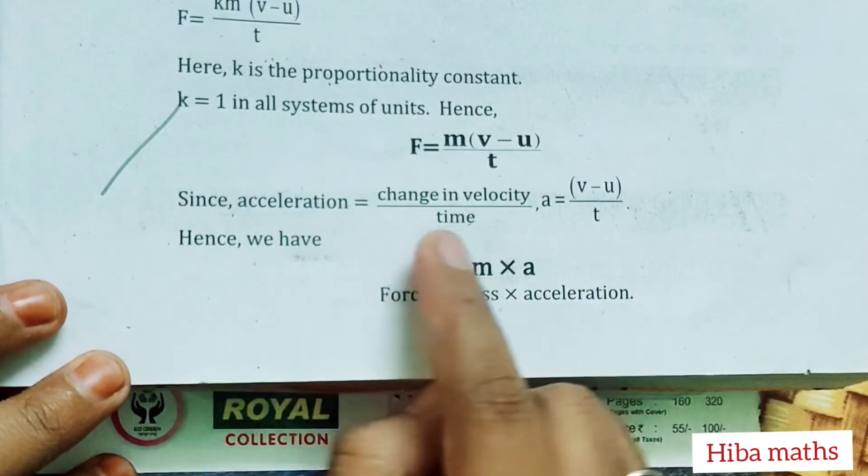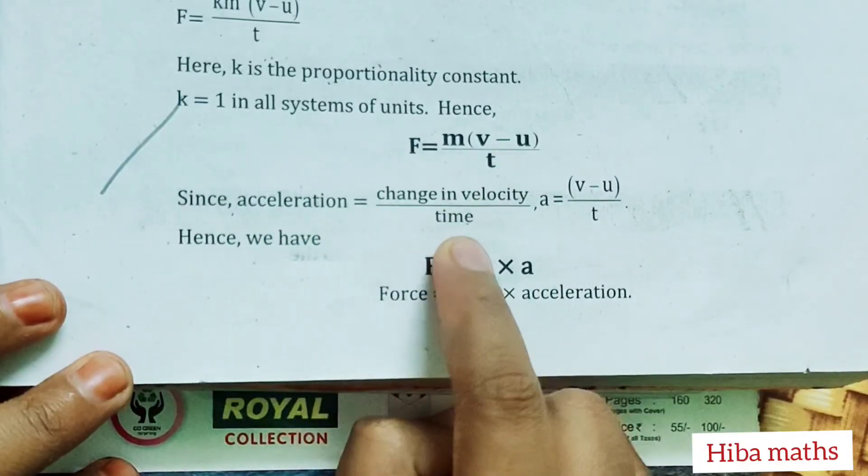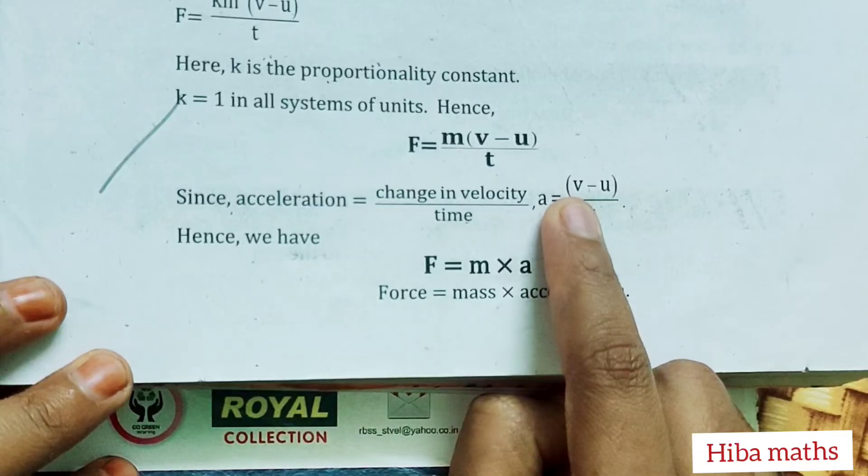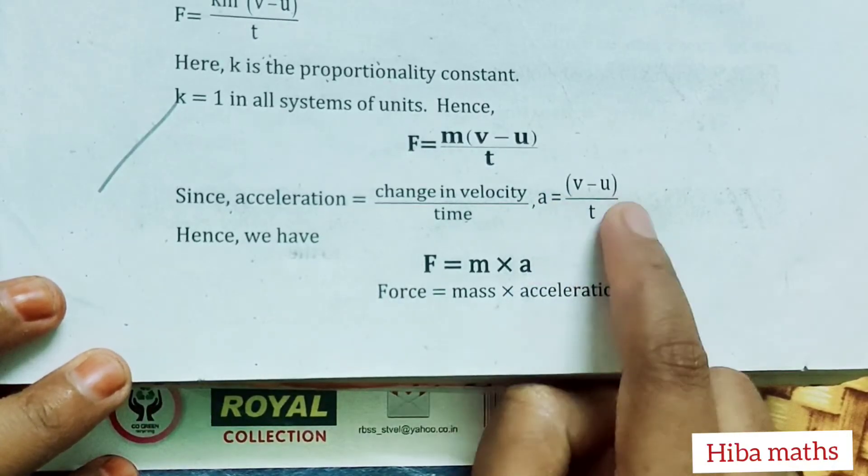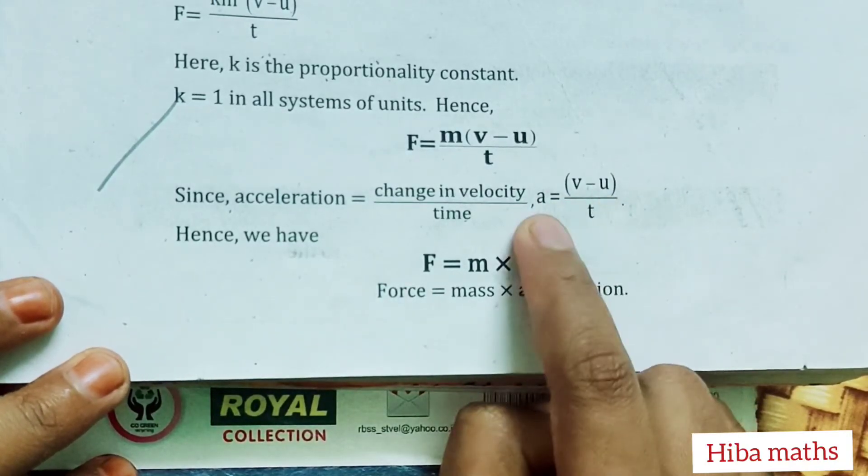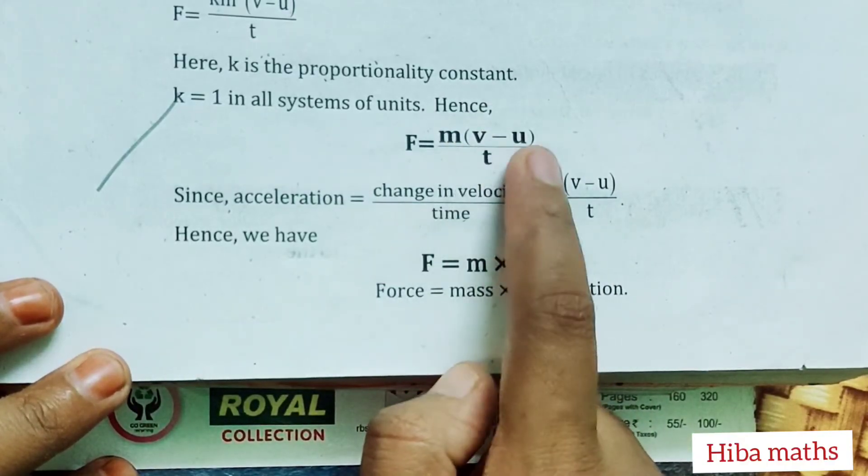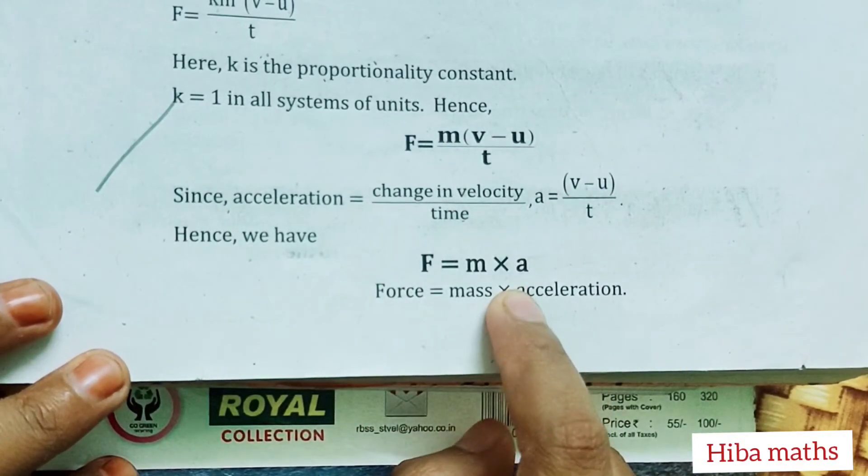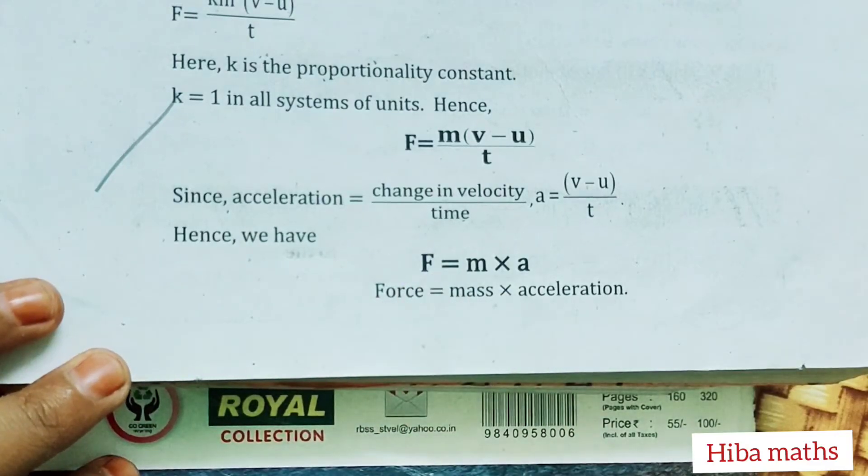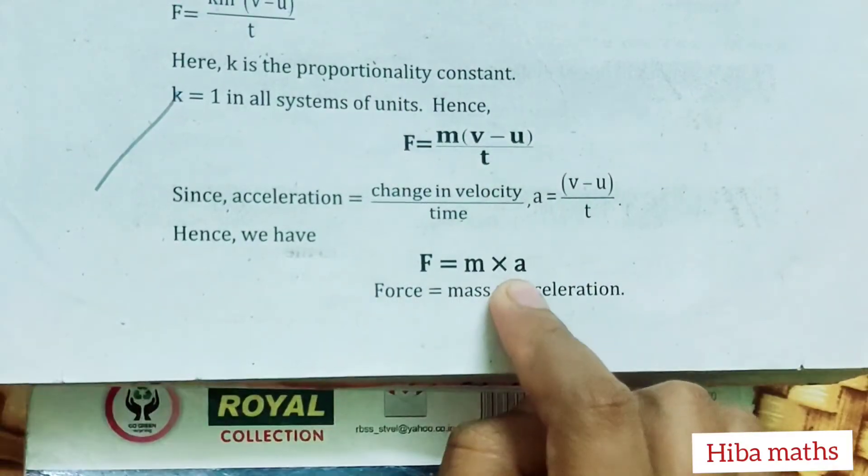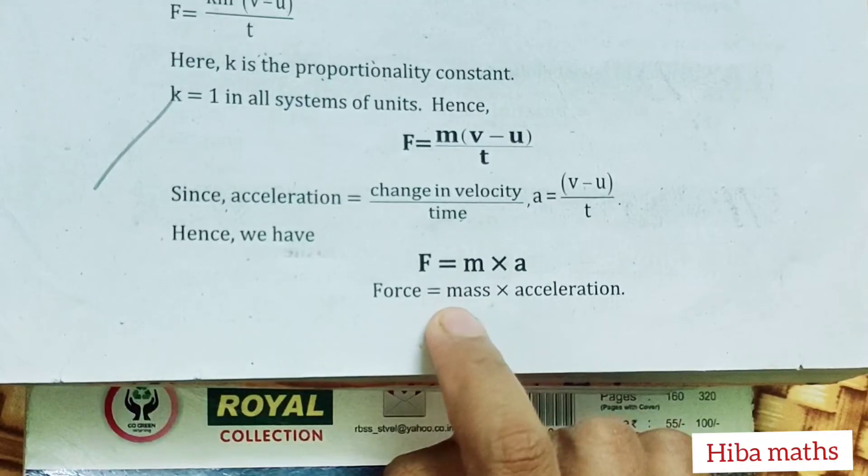Since acceleration = change in velocity/time, acceleration a = (v - u)/t. Therefore, F = m × a.